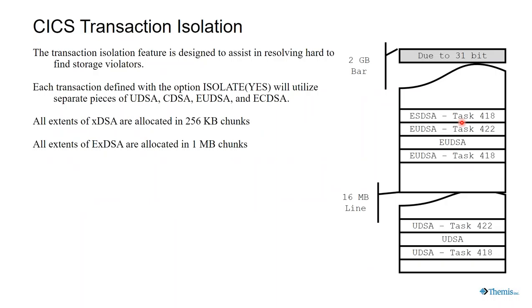Transaction isolation: everything is done in chunks or pieces — extents, if you will. If task 4.18 were to try to modify task 4.22, we would get an abend. However, there are tasks that are not isolated that run in what's called a common subspace, and they can violate each other as before. So you're just kind of masking the violations.